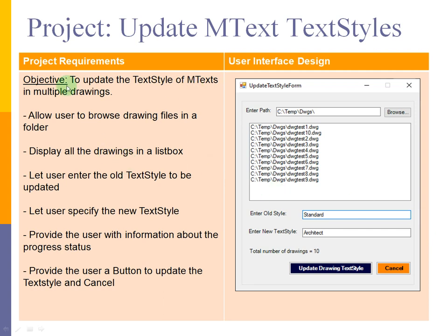Let's go over the project requirements. The objective is to update the text style of mtext in multiple drawings. We will allow the user to browse drawing files in a folder, display all the drawings in a list box, and let the user enter the old text style to be updated. The user can also specify the new text style, view the progress status, and use a button to update the text style or cancel and unload the form.